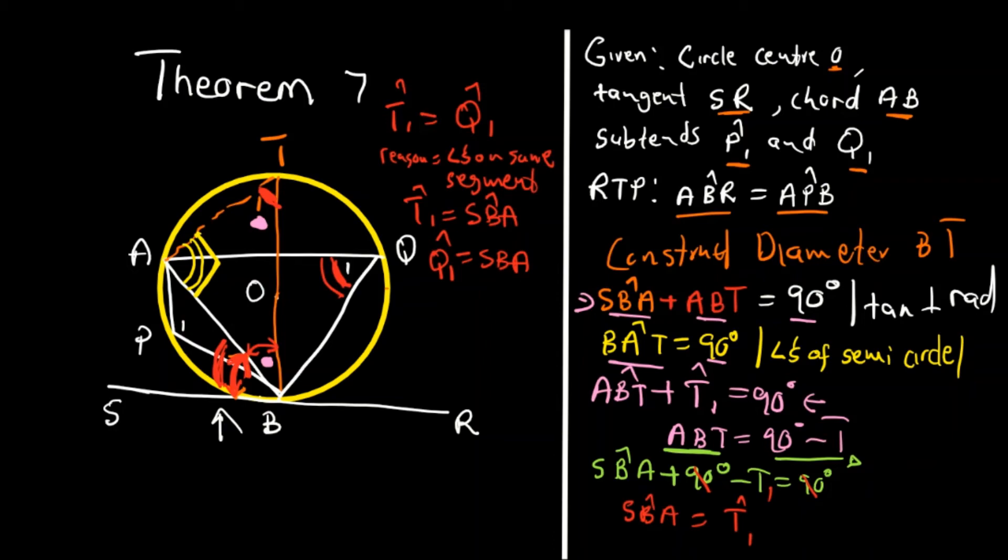Therefore, ABS or SBA rather, plus APR. So this angle here plus this one here, if you add them together, it will give you 180 degrees. Reason is a straight line.